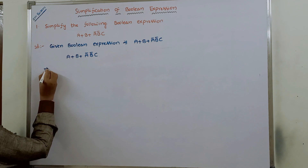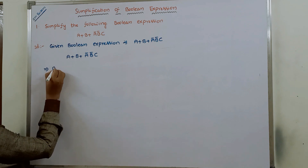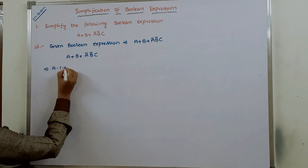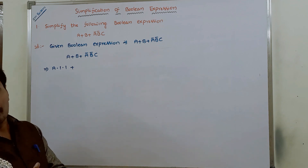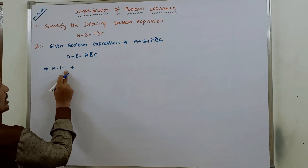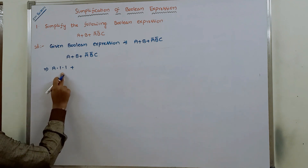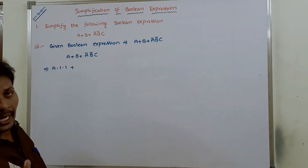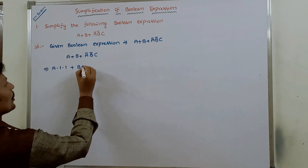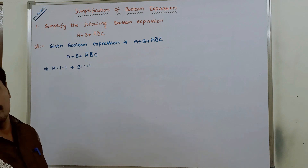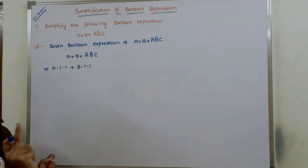In the first term, two variables b and c are missing, so the first term can be written as a·1·1, which is nothing but a. In the same way, in the second term, two variables are missing, so it can be written as b·1·1, which is nothing but b. For each and every missing variable, we can write it as 1.